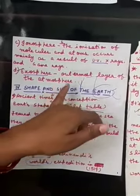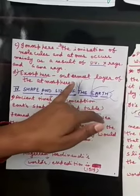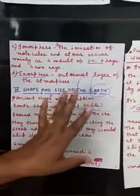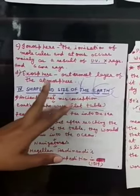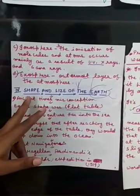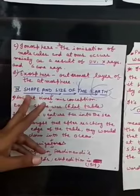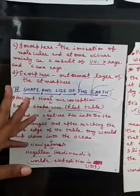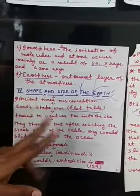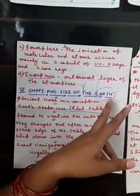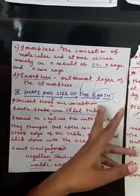So that covers the atmosphere — 4 layers. Now the next topic we are starting: Earth as a unique planet, shape and size of the earth.